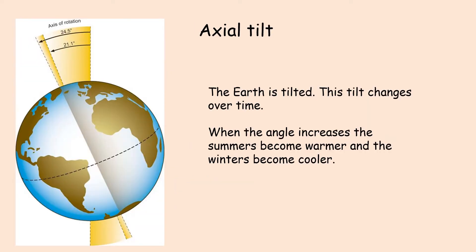The next natural cause of climate change is axial tilt. The Earth is tilted — it's not straight up. This tilt changes over time, and it's a natural phenomenon. When the angle increases, for example from 21.1 degrees up to 24.5 degrees, it results in more extremes of weather — the summer becomes much warmer and the winter becomes cooler. So it affects our climate by creating greater extremes in the weather.